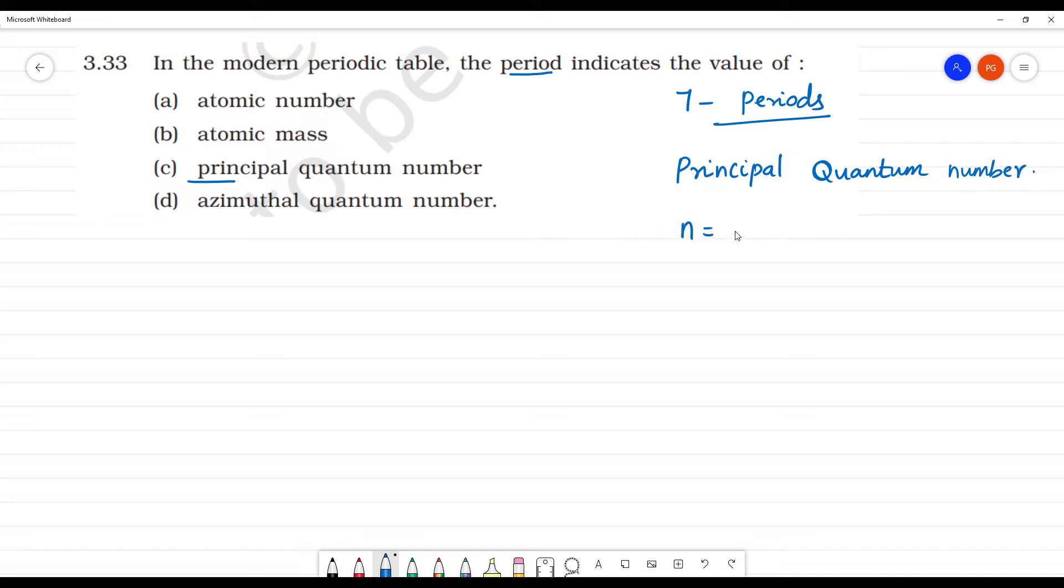n equals 1, 2, 3. 1 is the first period. So first period, how many elements? It contains two elements. n equals 2 is the second period and it has eight elements. n equals 3 is the third period and it also has eight elements.